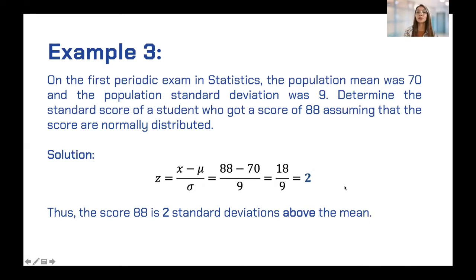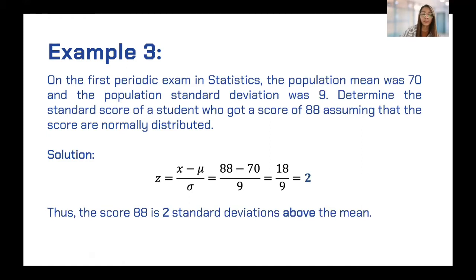Therefore, the score 88 is 2 standard deviations above the mean. When the Z value is positive, that is above the mean — on the right side of the mean. When negative, that is below the mean, or on the left side. When above, it means the score is high. Imagine if the score were more than 88 — it would be even farther from the mean, but still positive.